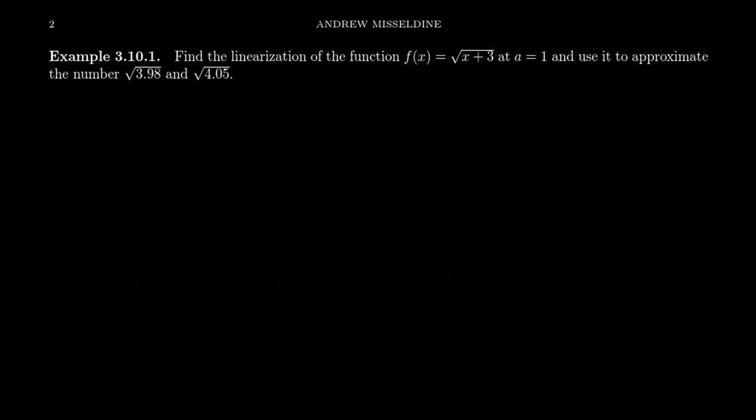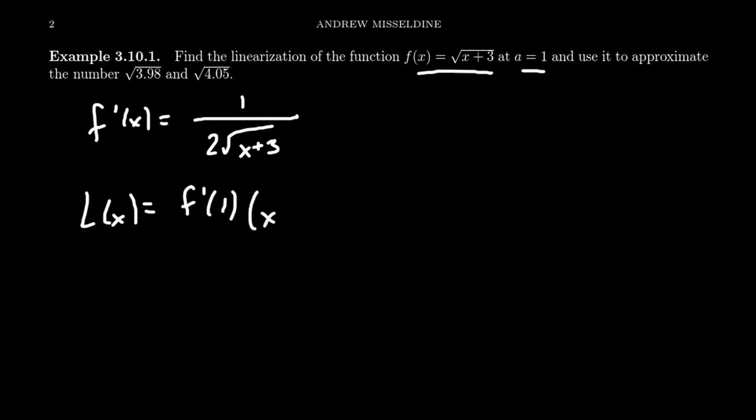All right. So as an example, let's take the function f of x equals the square root of x plus three. And using the point a equals one, we can compute the linearization. So first of all, to do the linearization, we need to know the derivative. So f prime of x, well, by the usual power rule and chain rule, the derivative here is going to be one over two times the square root of x plus three. The linearization L of x, like we saw before, it's just the tangent line f prime at one times x minus one plus f of one. So there's a couple of things to compute there.